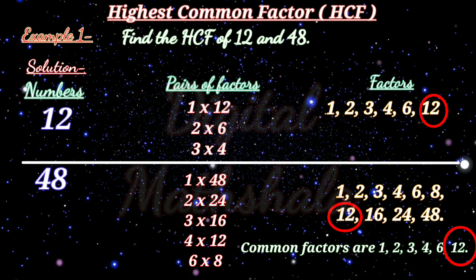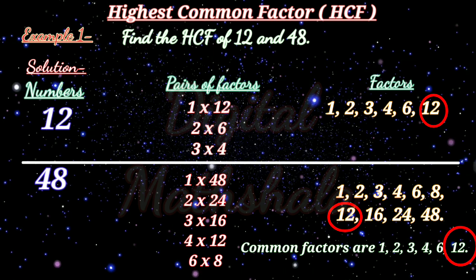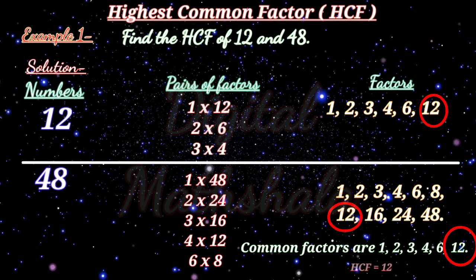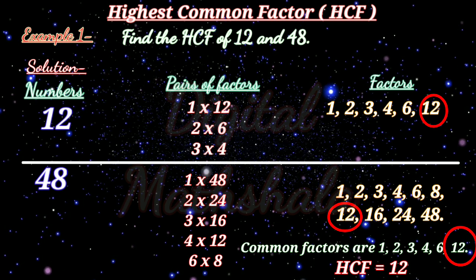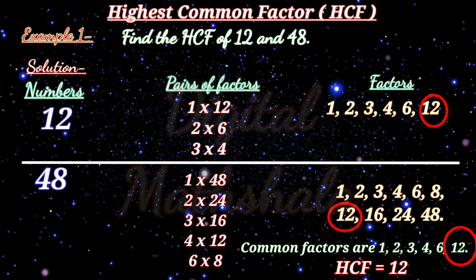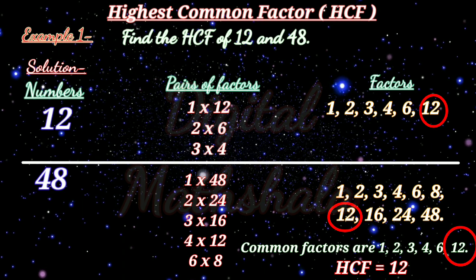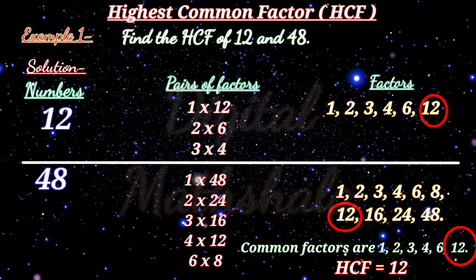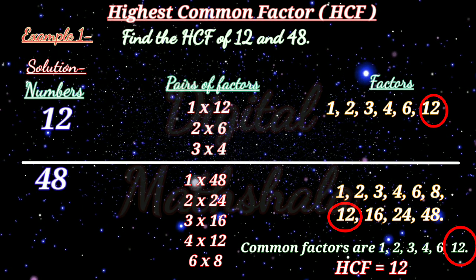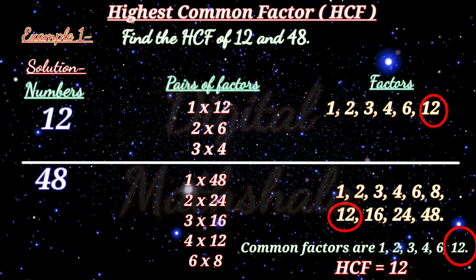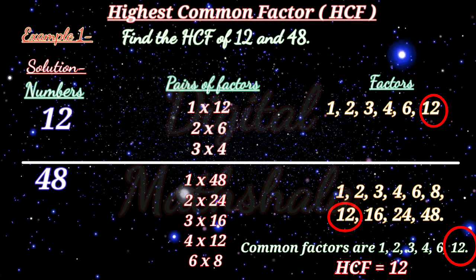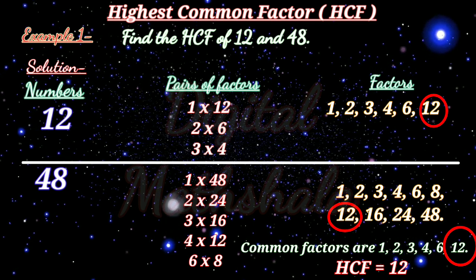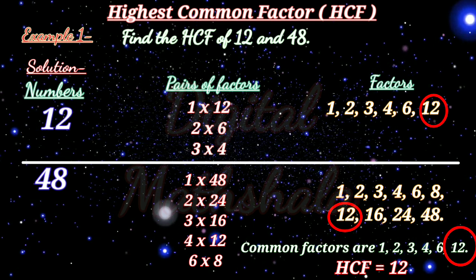Thus the HCF of 12 and 48 is 12. HCF is the largest common factor that two or more numbers have.